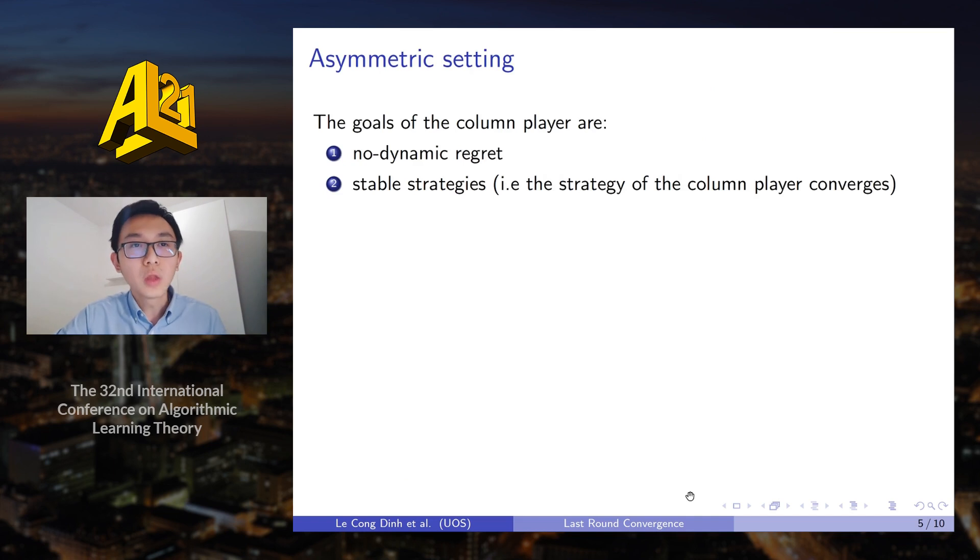So in this paper we consider an asymmetric setting when the goal of the column player is to achieve no dynamic regret and stable strategies, which means that the strategy of the column player will converge to some fixed strategy.